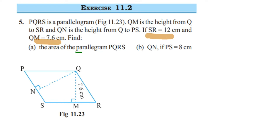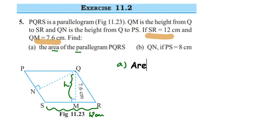We're going to apply the direct formula: base multiplied by height. First we need to identify which is the base and which is the height. According to the question, QM is the height to the base SR. QM is perpendicular to SR, so SR is the base. The area of a parallelogram is base into height — we substitute directly.